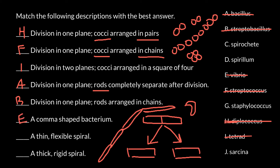Next: a thin flexible spiral. The name also contains 'spiral' or 'spirochete'. Answer C. And the last one: a thick rigid spiral. Out of the three remaining answers, only one would match this description. This would be spirillum. Answer D.